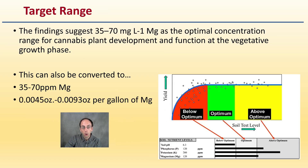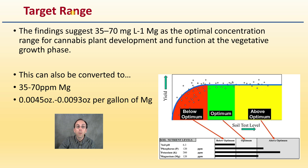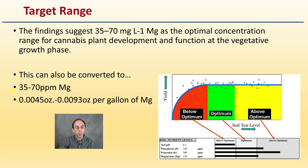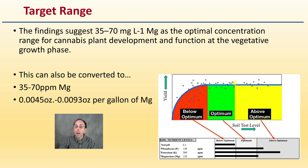What's the general target range, and what could we add to correct this if we're below optimum? The findings suggest that 35 to 70 milligrams per liter of magnesium is the optimum concentration — it is a range — for cannabis plant development and function at the vegetative growth phase. This can be converted to parts per million or ounces per gallon. Below optimum is shown in red, there's an optimum range, and then above optimum. If you get a soil test back, you want to be in that optimum range. Getting too excessive can actually cause a decrease in yield — toxicity symptoms can lead to reduced yield. So staying in that optimum range is really the target of any grower.